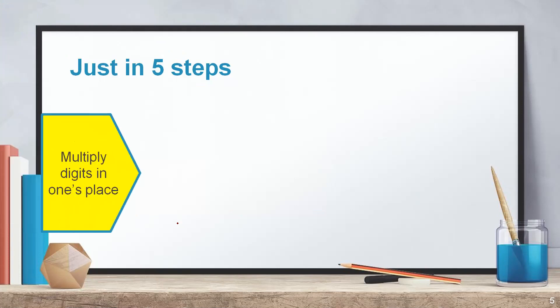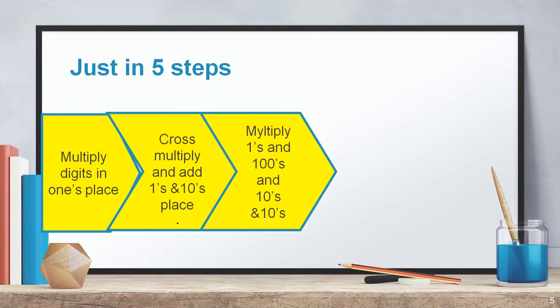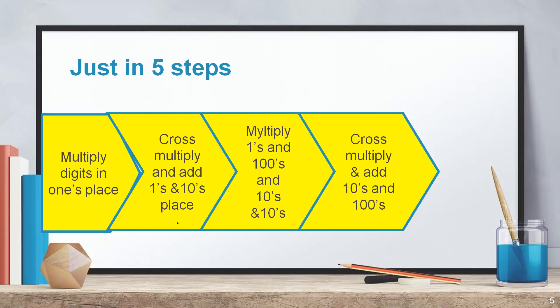The first step is to multiply the digits in the 1s place. Next, you have to cross-multiply the digits in the 1s and 10s place and add them. Third step is multiply 1s and 100s and 10s and 10s, then add all the 3. Fourth step is cross-multiply and add the 10s and 100s place numbers. And the fifth step is multiply the 100s place.